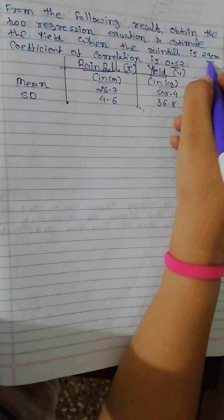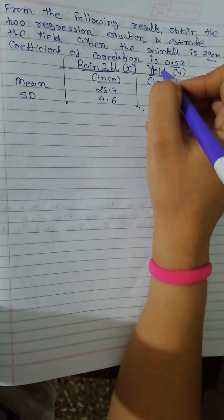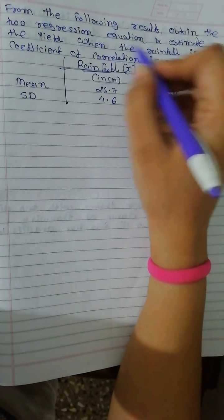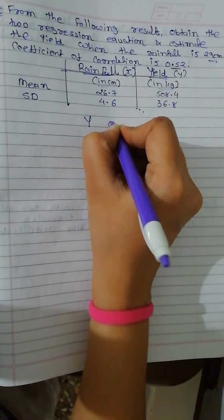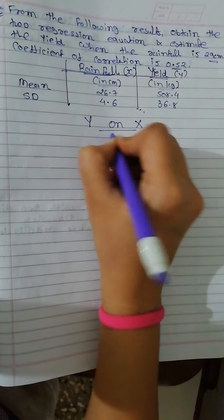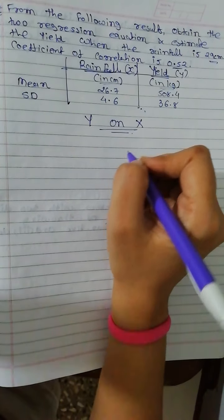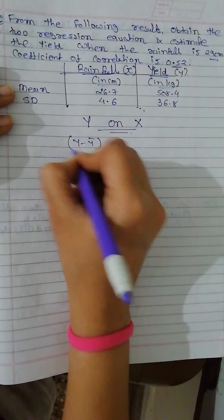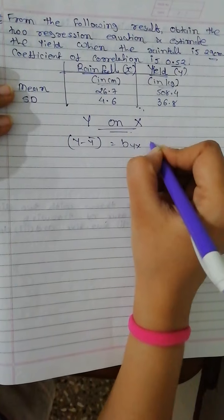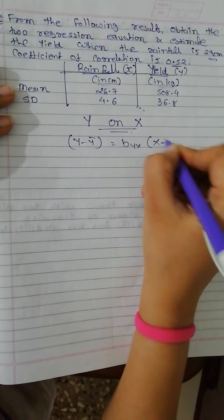So we need to estimate yield. Yield depends on rainfall, so our yield is y. So that is y on x estimation. This will be y minus y bar equals byx times x minus x bar.